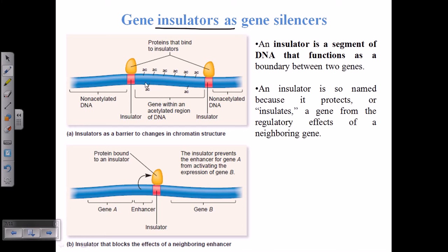An insulator is nothing but a segment of DNA that functions as a boundary between two genes. For example, here we have gene A and gene B, and in between them we have a boundary DNA sequence. Some DNA sequences that are not any coding sequence — just a sequence. These are called insulators.